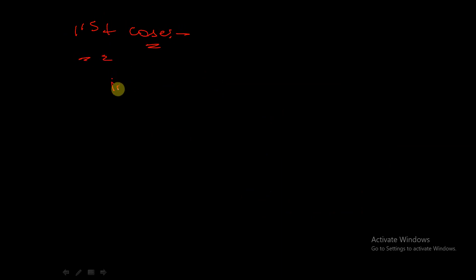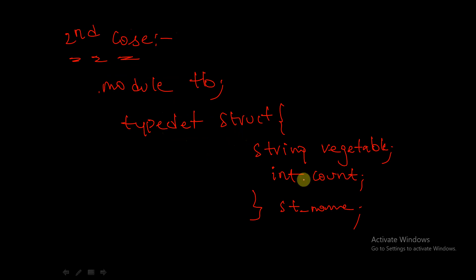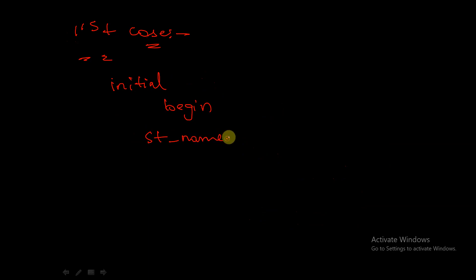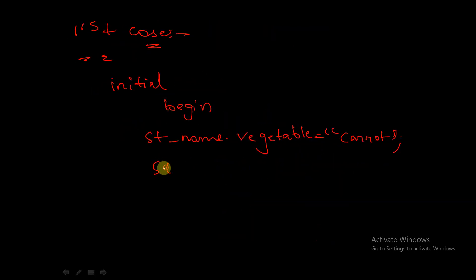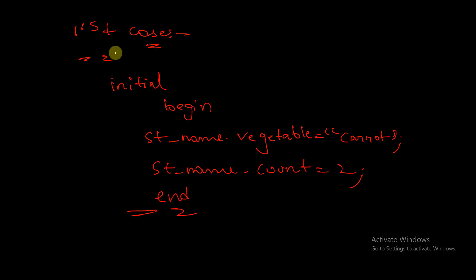Within an initial begin block, I will assign values. Using the instance name 'ht_name.vegetable', I can give any name — let's say 'carrot'. Next, to give the value of count, using 'ht_name.count = 2'. Then end the block.